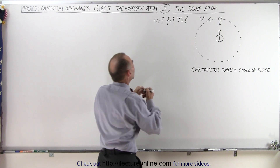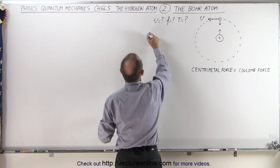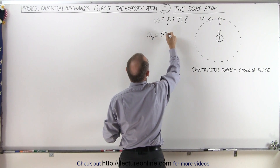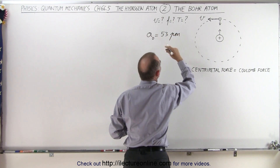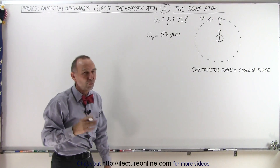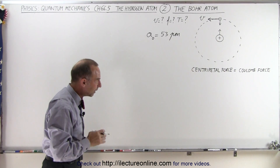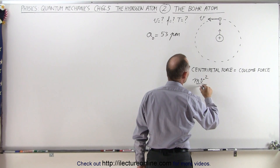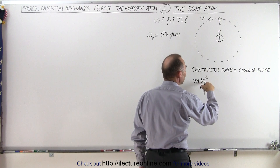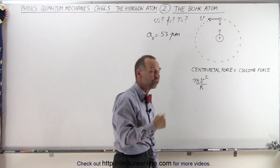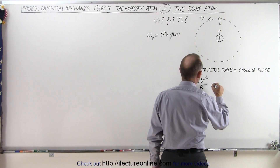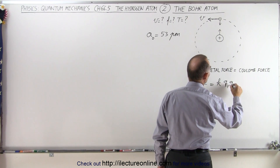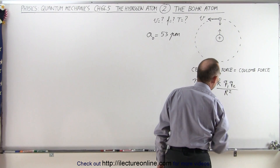Assuming we know the radius, and in this case we use the symbol A sub nought for the Bohr radius, which is equal to about 53 picometers, which is 53 times 10 to the minus 12 meters. Now the centripetal force equation is mv squared over r — that's mass times the centripetal acceleration, which is v squared over r — we set that equal to the Coulomb force, which is k times q1 times q2 divided by the distance between them squared, in this case that would be the radius of the orbit of the electron.